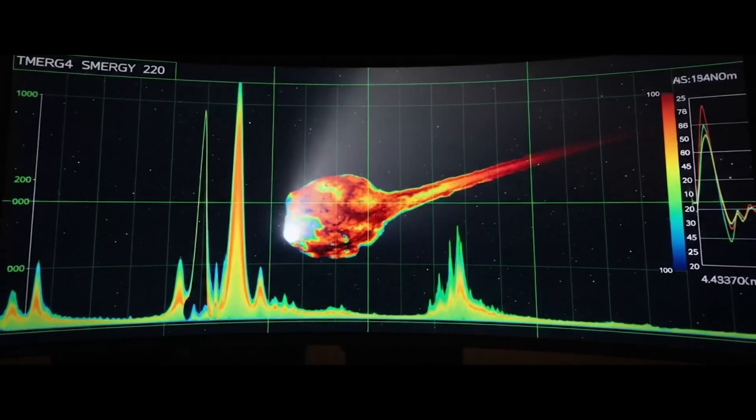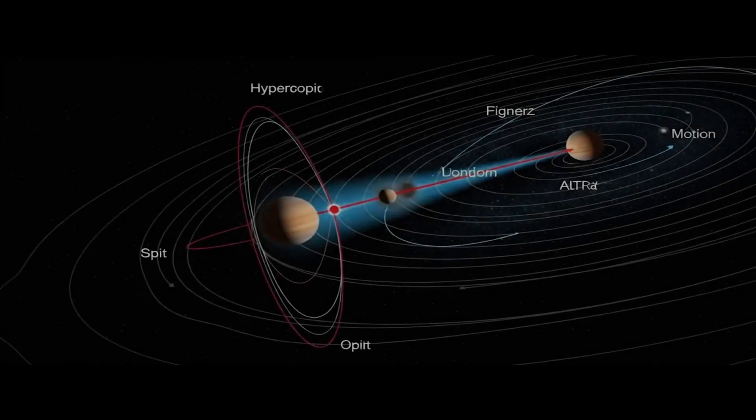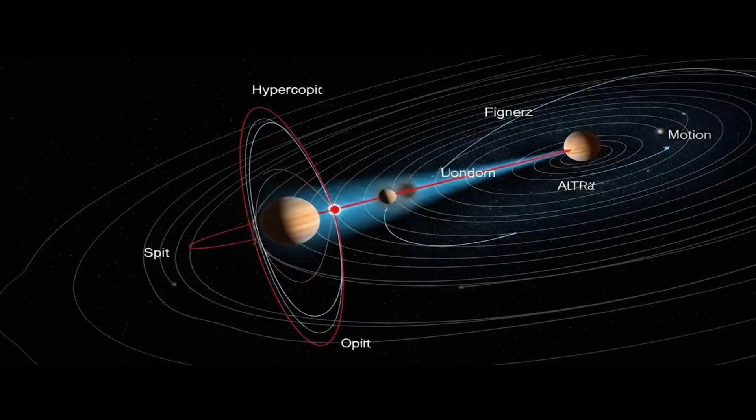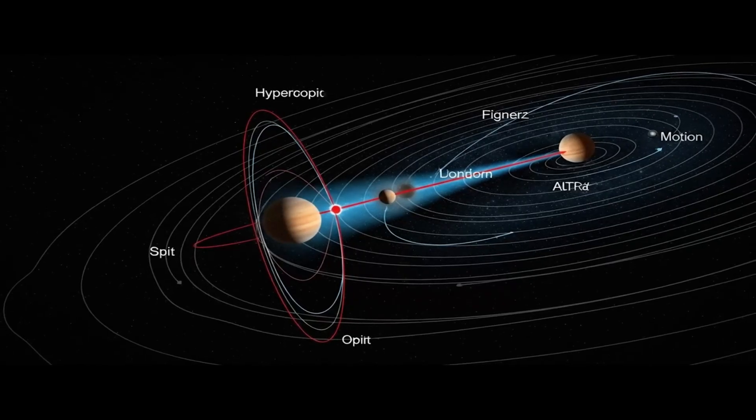Only recently, through space-based instruments like the solar orbiter and the James Webb, has it been possible to resume tracking. The images show something disconcerting. 3I atlas is behaving differently from any other known comet.